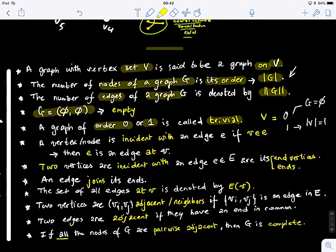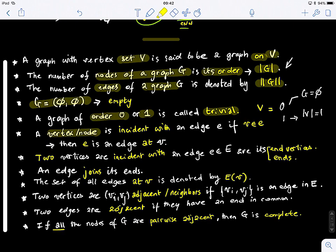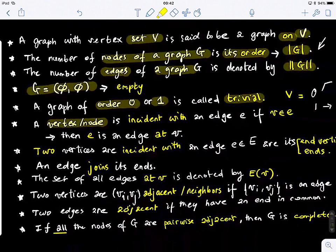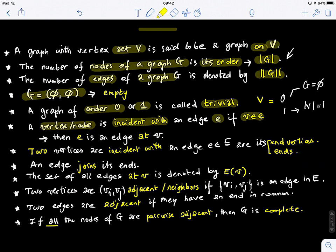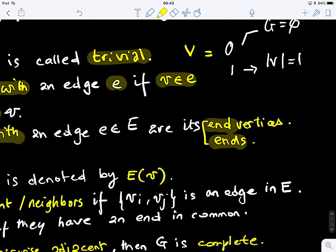We have a vertex or a node. When we say vertex, it means the same thing as a node. These two terms are exactly the same. A vertex node is incident with an edge E if V belongs to E. It means that E, the edge, is an edge at the node V.